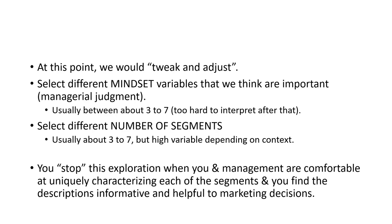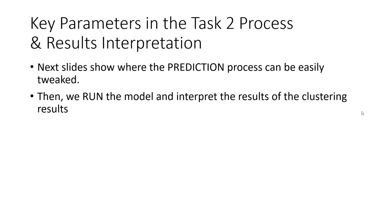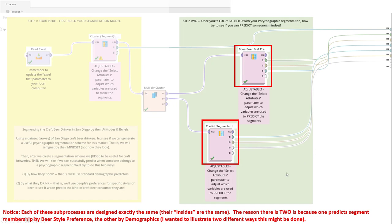For now, let's assume we nailed it in our very first try. The segmentation solution shown in this video is the one we're going to use for the rest of the video. In this next step, we need to predict segment membership. In the task 2 process, if you go back to RapidMiner, there are a few additional key parameters to tweak. Each one of these subprocesses is exactly the same in terms of its design — there's only one difference: one is designed to predict cluster membership using beer style preference and the other is for demographics.